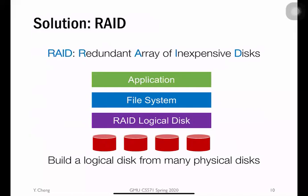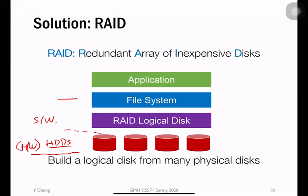That is why we introduce the solution called RAID — Redundant Array of Inexpensive Disks — to perform with higher performance, larger capacity, and greater reliability. If you look at this example stack diagram, at the very bottom we have the hardware — the hard disk drives. On top of that is software. The lowest level of software is the RAID logical disk, sitting directly on top of the hardware, exposing the interface of a logical hard disk drive to the upper level, which is the file system.